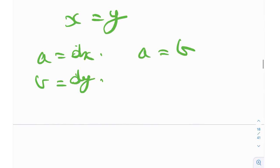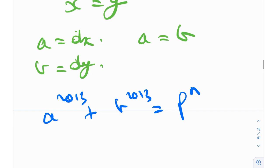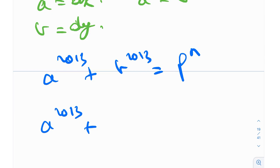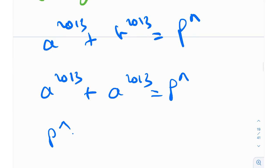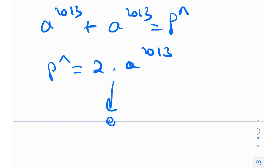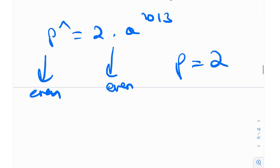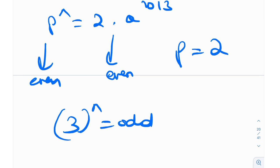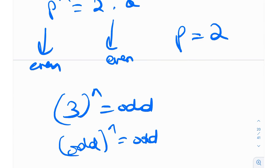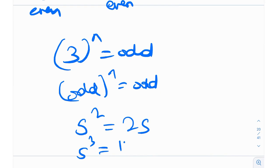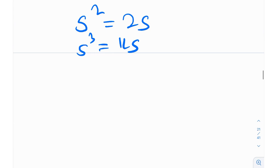Plugging a = b into the original equation: a^2013 + a^2013 = p^n, so p^n = 2 · a^2013. The right-hand side is even, so the left-hand side must be even, which means p = 2, since 2 is the only even prime. Any odd prime raised to any power remains odd, so p must equal 2.